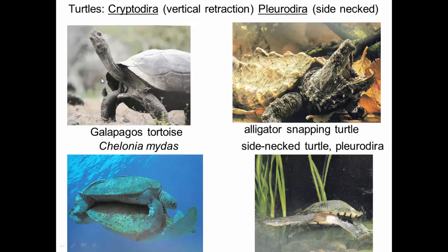Here's a Galápagos tortoise, one of the largest reptiles — you can see how big they are in comparison to people. This is a leatherback sea turtle, an alligator snapping turtle, and a side-necked turtle. They all have this shell, although in leatherbacks the shell has been mostly reduced in rigidity. The shell actually evolved from the ribs, so the scapula and shoulders are essentially inside the ribs — a remarkable evolutionary change in body plan.